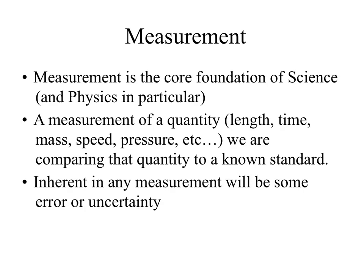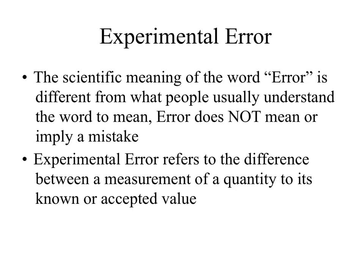The word uncertainty is sometimes called error, but I don't like that word because it connotes a mistake. We're going to see that an experimental error does not mean an experimental mistake — it means an experimental uncertainty built into the measurements you're taking. So let's look at the term experimental error, which is the most commonly used term, though I prefer experimental uncertainty.